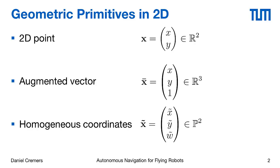At first glance this makes things more complicated seemingly, but as we will see in this video, it actually simplifies calculations such as intersecting lines and points and representing transformations of these points in terms of simple matrix vector products.